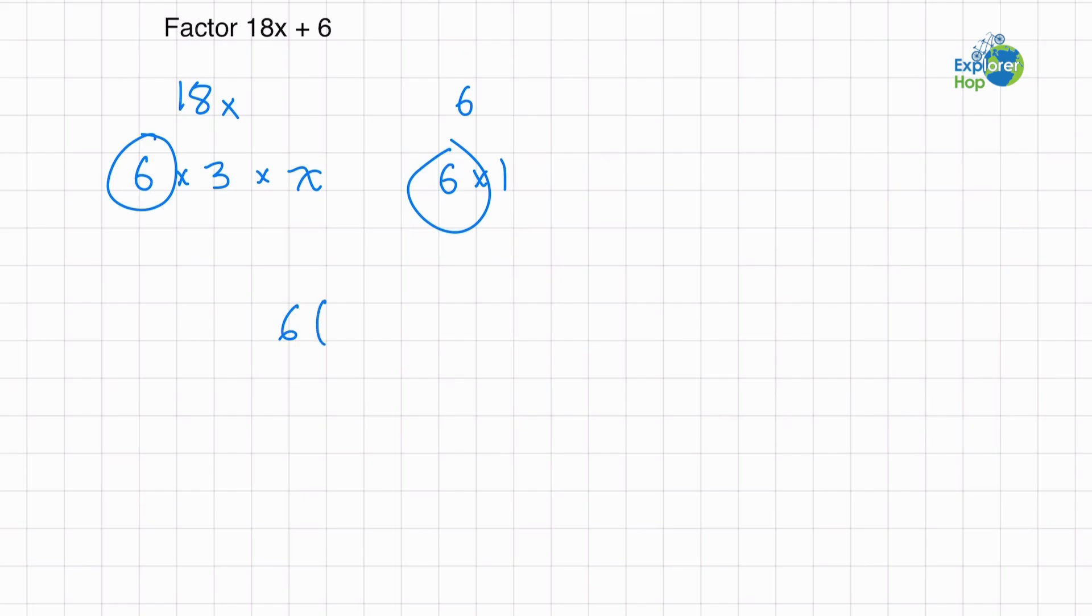And in the brackets, we put the rest of them together. So we're going to multiply these two together. So 3 times x is 3x, and 1 is just 1. So we do plus 1. So this is our factored form.